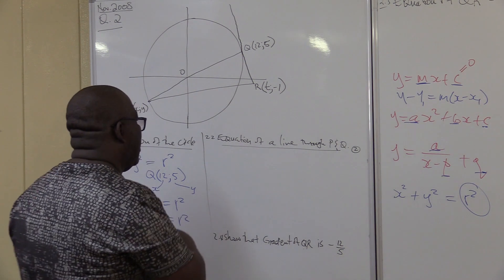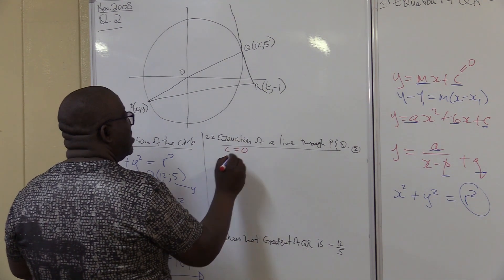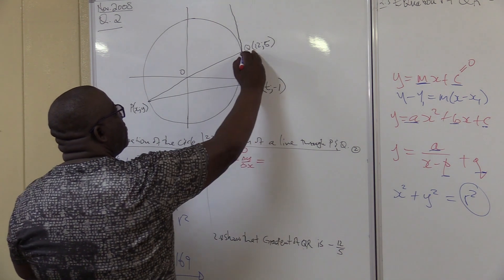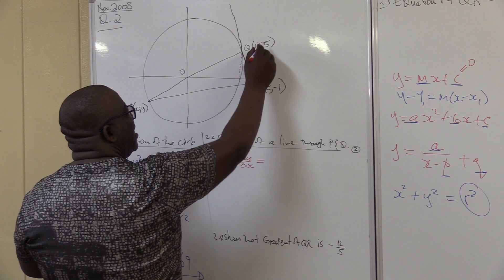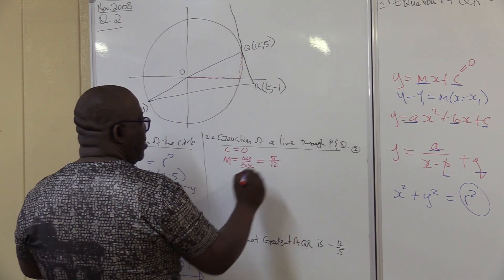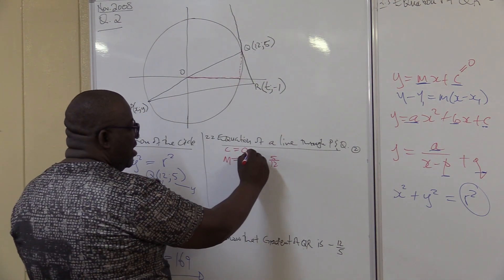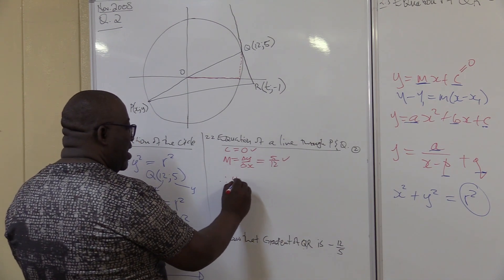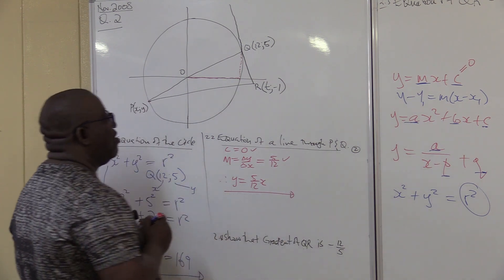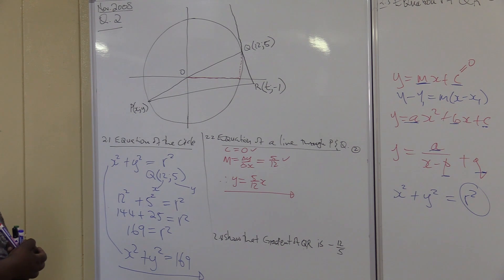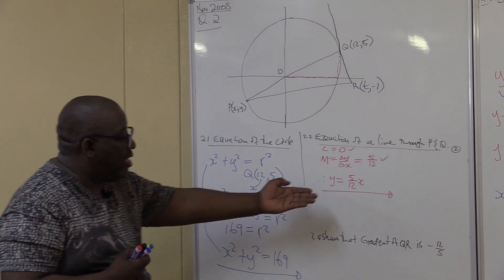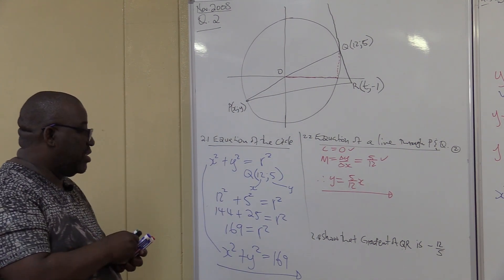c = 0 in this case. The gradient m = change in y / change in x. The distance traveled in y from there to here is 5, and in x it is 12. This is a positive gradient. So y = (5/12)x + 0, which gives us y = (5/12)x. That is the equation of line PQ.